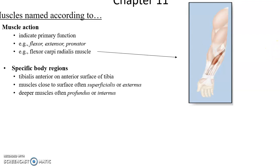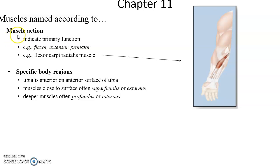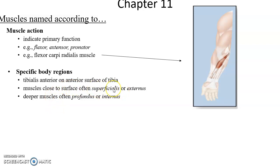Muscles are named based on various characteristics. They can be named based on their primary action — flexors, extensors, pronators. For example, flexor carpi radialis is a flexor causing flexion. They can also be named by specific regions of the body — for instance, tibialis anterior is on the anterior surface of the tibia. Muscles can be named based on their depth: if close to the surface, they may be called superficialis or externus; if deeper, profundus or internus.